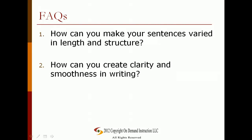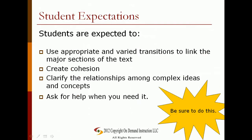How can you make your sentences varied in length and structure? By using what you learned in this lesson, you can manipulate your writing in whatever way you wish. Using transitions, coordinating clauses, and subordination will help you to create a more logical order in your writing. How can you create clarity and smoothness in writing? Learn all that you can about writing; apply what you learn and it will improve. As a student, you're expected to use appropriate and varied transitions to link the major sections of the text, create cohesion, and clarify the relationships among complex ideas and concepts.